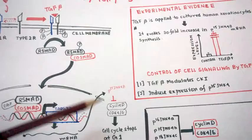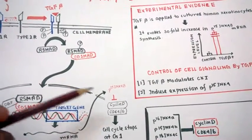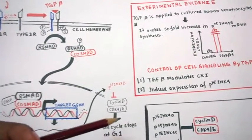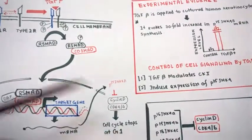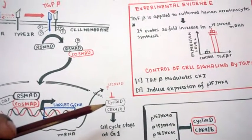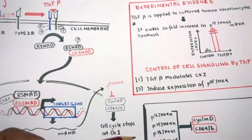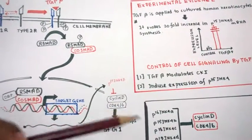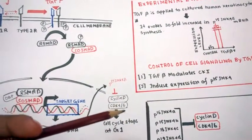This suggests that huge amounts of CKIs are produced when TGF beta is applied, and thus cell cycle growth is checked and cell cycle progression is checked. Induction in the P15 level is observed.